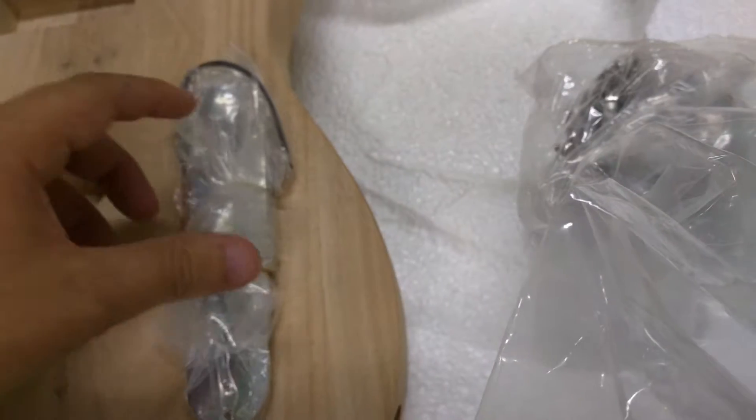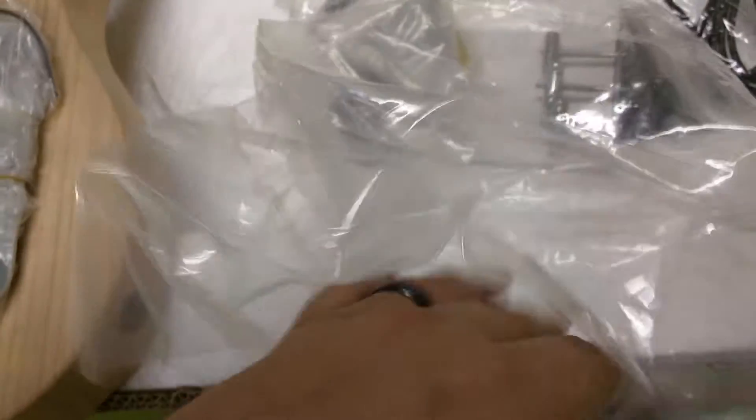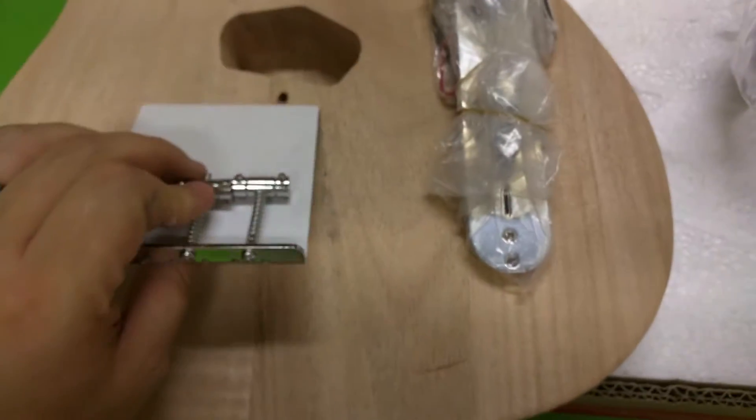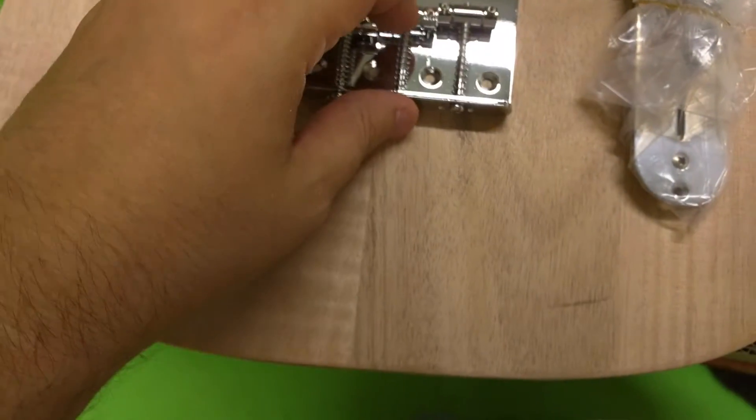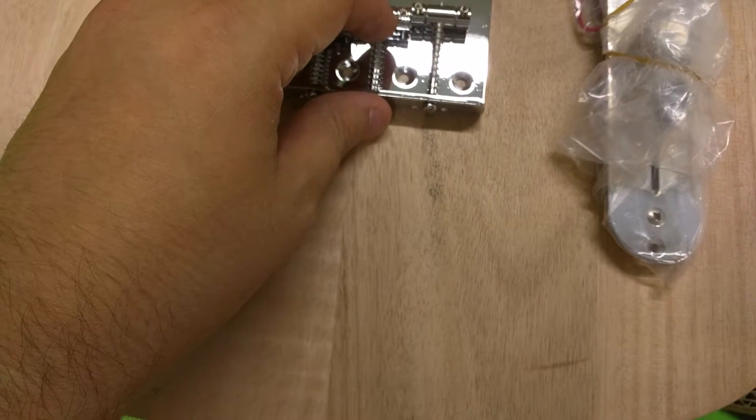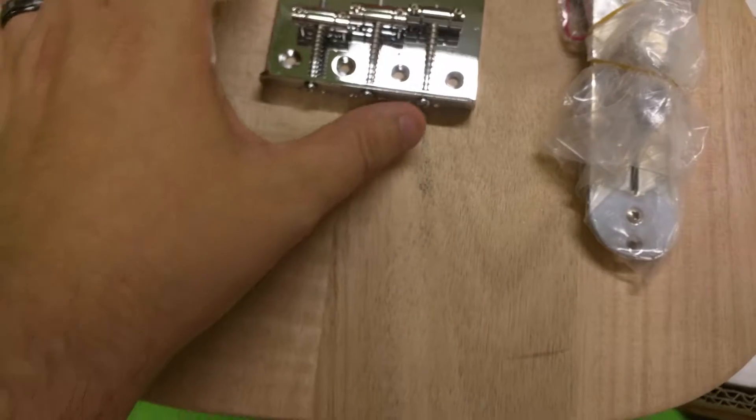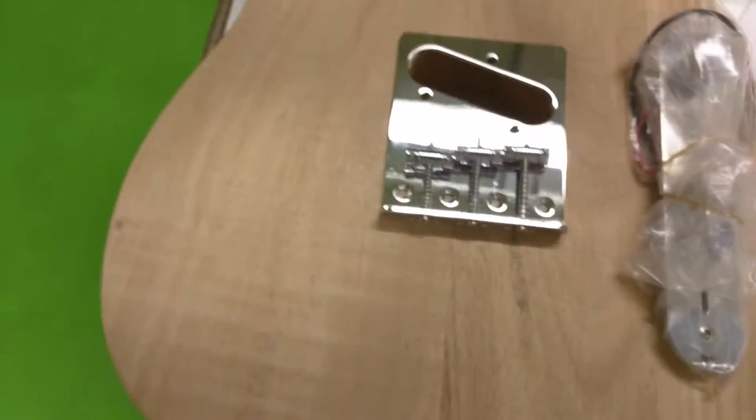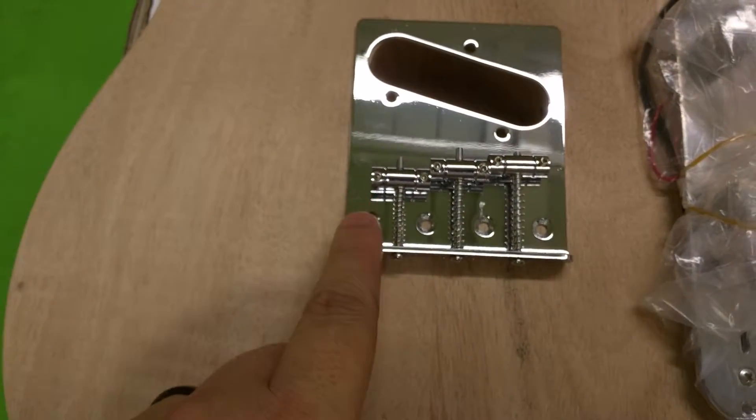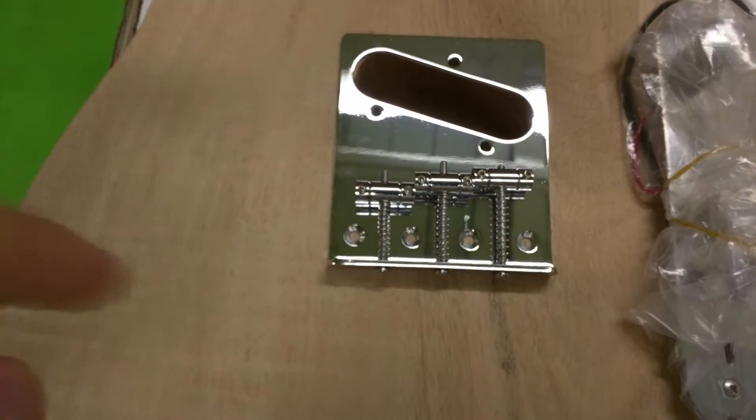Now here's our control cavity. There's our controls that go right there. There's our bridge that, like I said, we're gonna have to mount that and drill those holes out, all the way through the body.